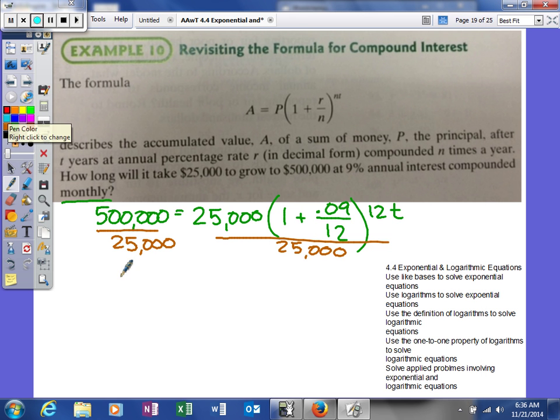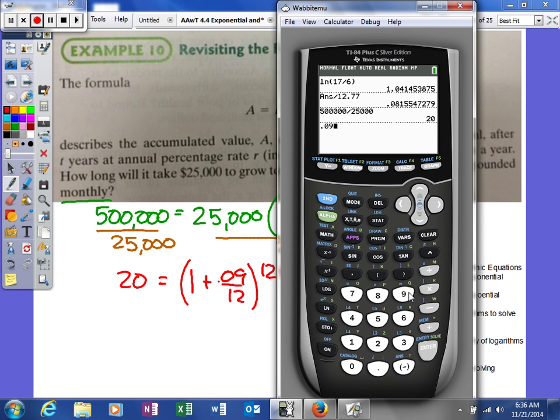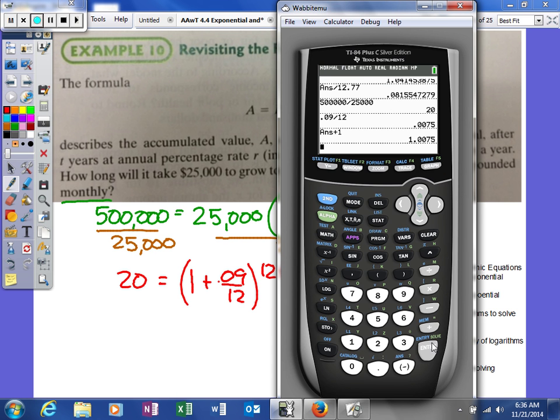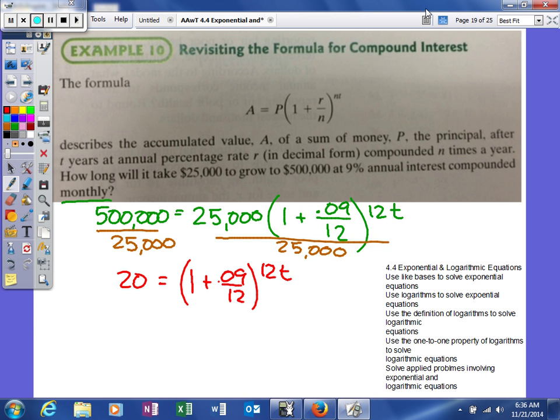So 20 equals (1.0075) to the 12t. I'm actually going to figure out what that is. 0.09 divided by 12 plus 1, so 1.0075. I'm just going to write that in there since I'm running out of room. 1.0075. All right.